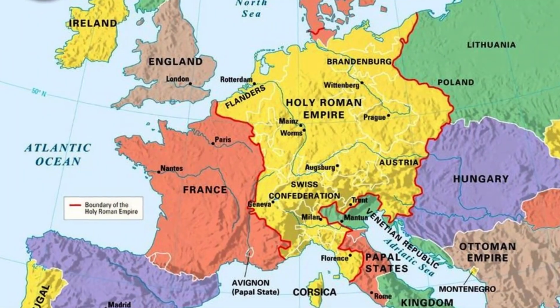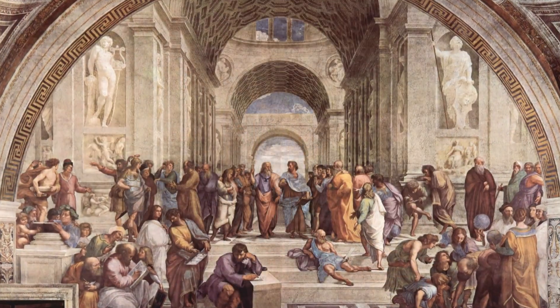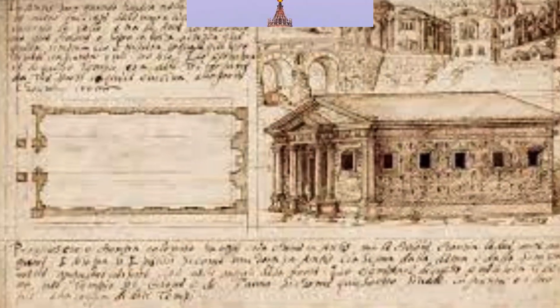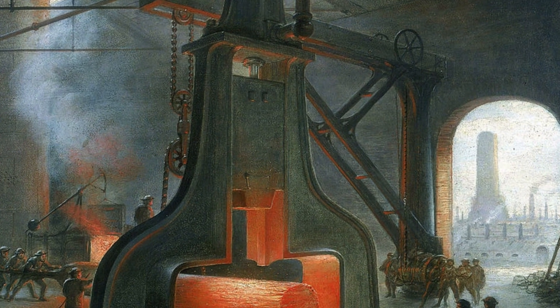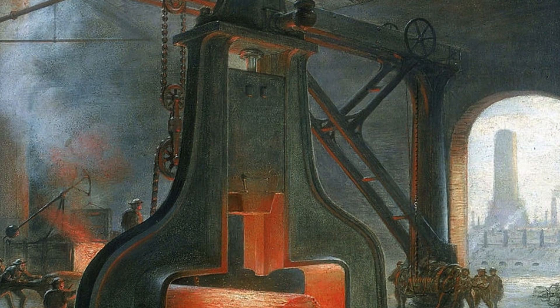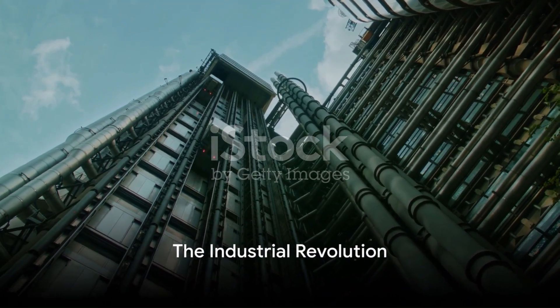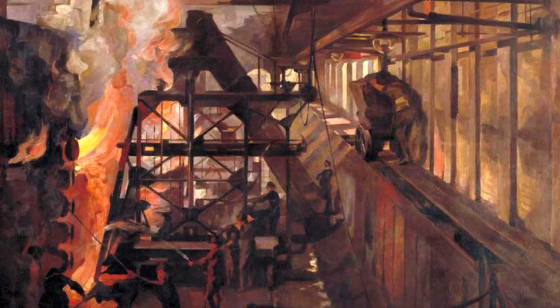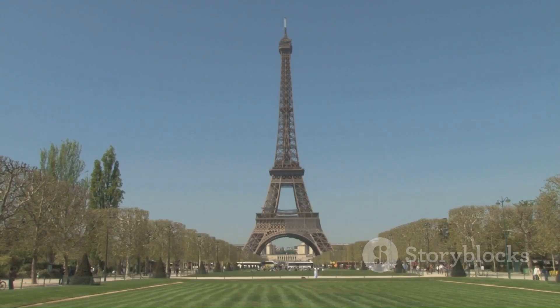Picture this — it's the post-Renaissance era and the world is brimming with classical inspirations. Think columns, symmetry and grandeur. But then the game changer arrives with the industrial revolution. The industrial revolution shook architecture to its core. Thanks to groundbreaking materials like steel and iron, architects began to dream big. One iconic example of this era's innovation is the Eiffel Tower in Paris, a towering testament to how engineering transformed our world.